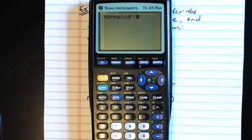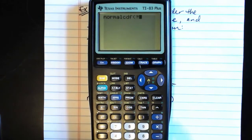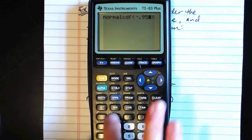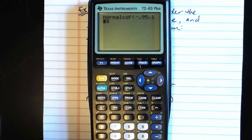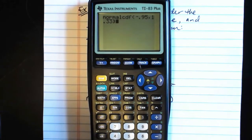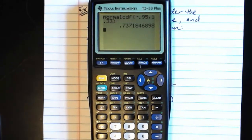Again, if you have the new OS at this point, you'll have a different screen that pops up. But our low value is negative 0.95, comma. Our high value is 1.33. Close out the parentheses. Press Enter.